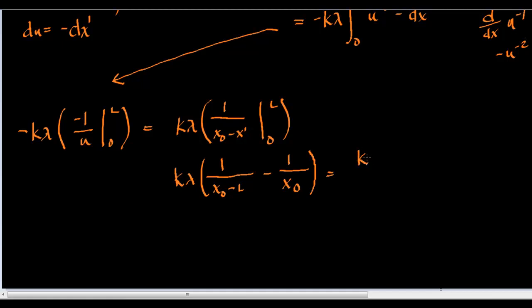This can be rewritten further by distributing k lambda into both of these. So, we'll put k lambda in. x naught minus l minus k lambda of x naught.